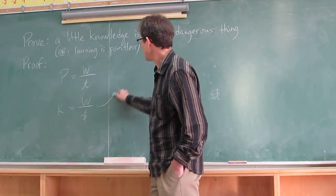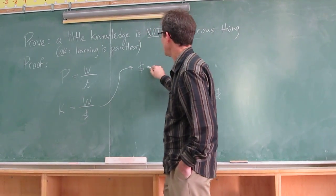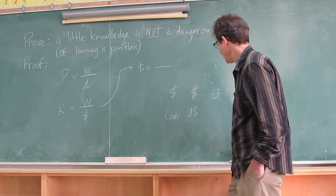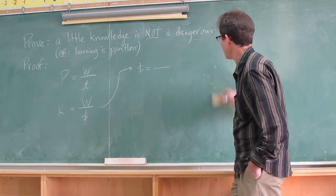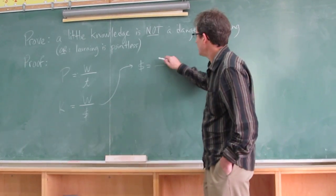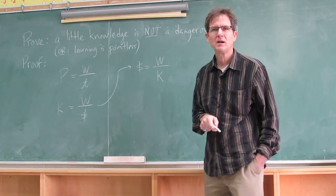If I rearrange this to solve for money, I get money equals what? Work divided by knowledge. Right. I shouldn't have given you the division sign in case you messed up.